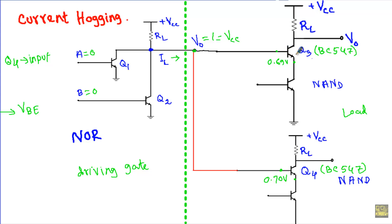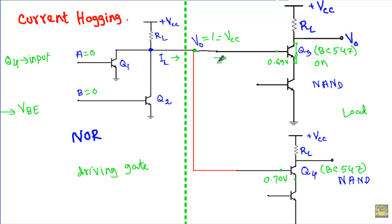— let's say Q3 has a base-emitter junction voltage of 0.69V and Q4 has 0.70V. The transistor with the smaller VBE will switch ON faster. So when the output is at logic 1 and VCC appears at the output terminal, transistor Q3 goes into the ON state faster than Q4. When Q3 is ON, its collector and emitter terminals act like a closed switch, providing a low resistance path for current flow, so Q3 draws the maximum amount of IL.